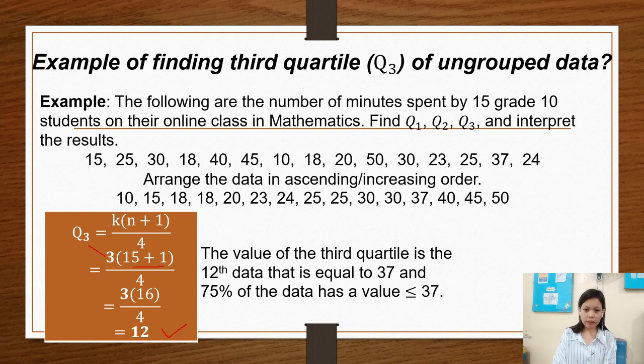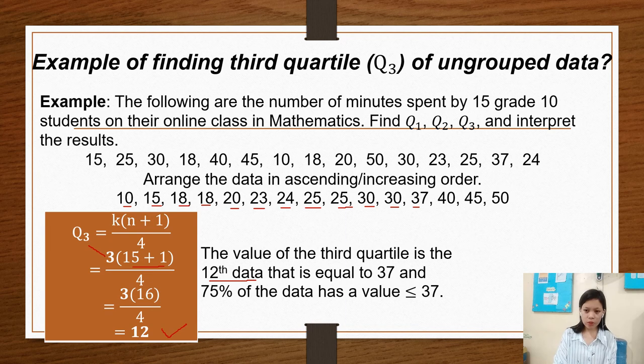So our quartile 3, the value for the third quartile is the 12th data, that is equal to 37. So we will count from the first: 1, 2, 3, 4, 5, 6, 7, 8, 9, 10, 11, 12. Since this is the 12th data, this is the 75% of the data, which is less than or equal to 37.